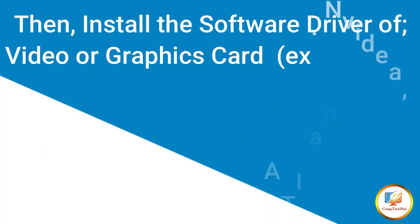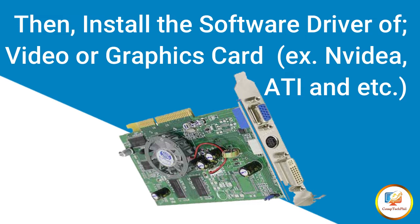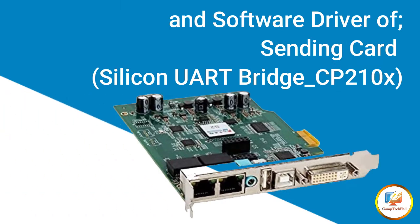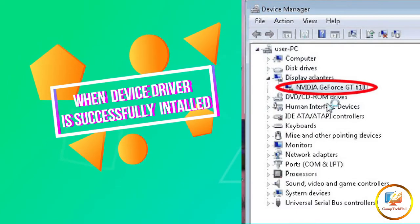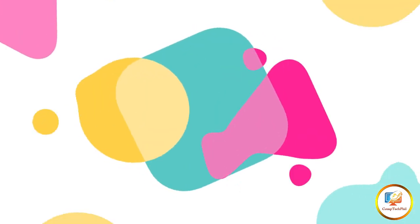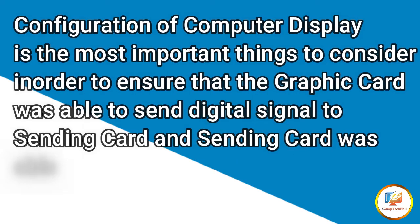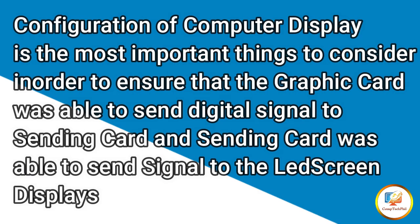Connect the video card and sending card to your computer with its cables. Then install the super driver of the video or graphics card — such as NVIDIA, ATI, and so on — and also the software driver of the sending card. When the device driver is successfully installed, configure the computer display. Display configuration is the most important thing to ensure that the graphics card can send a digital signal to the sending card, and the sending card can send signal to the LED screen displays.